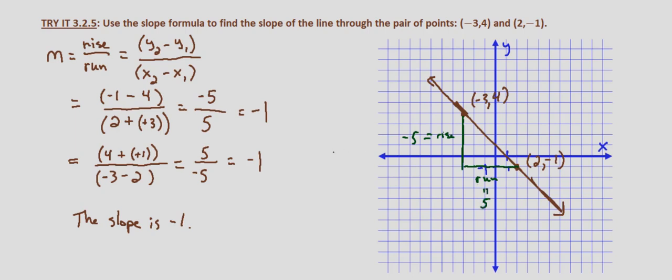So rise over run equals negative 5 over 5, which equals negative 1. And that verifies that the slope of the line that goes through our 2 given points of negative 3, 4 and 2, negative 1 is negative 1.